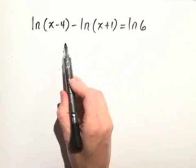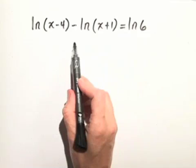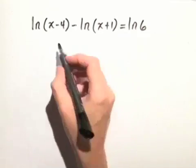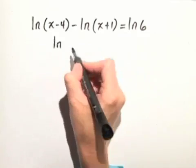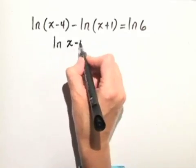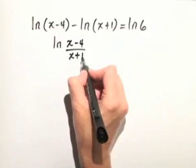So we want to make sure that on the left hand side, we combine these two into one by using the quotient property. We can rewrite the left hand side as the natural log of (x-4)/(x+1).